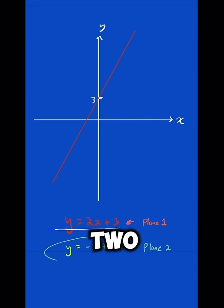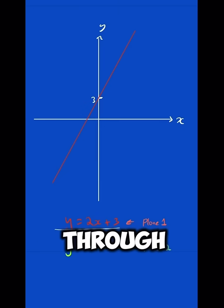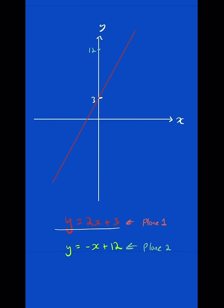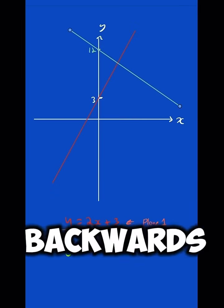Done. What about plane 2? Well, it's going to cut through at 12 up here. And it's going to be going for every one that goes along in the x, it's going to go down by 1 in the x. So it would look something like this. And it would go the same again, backwards.